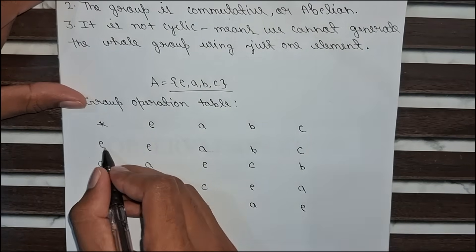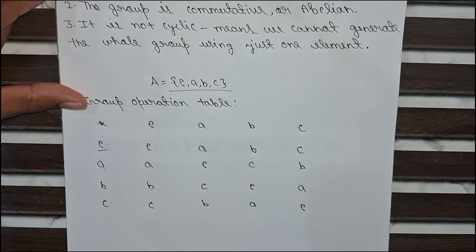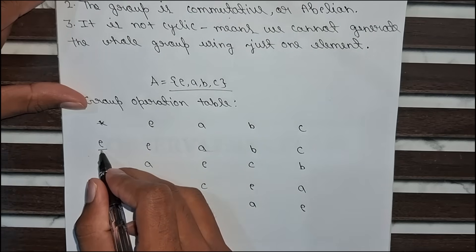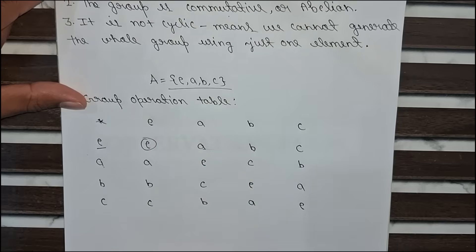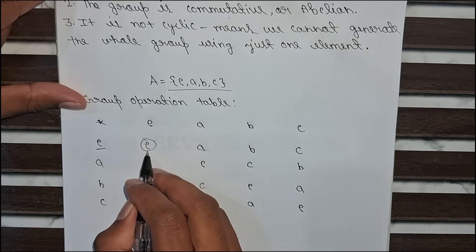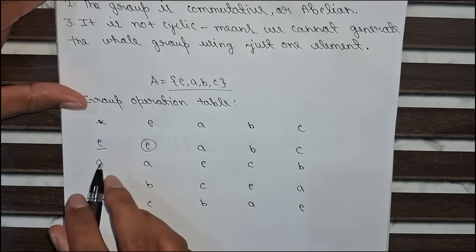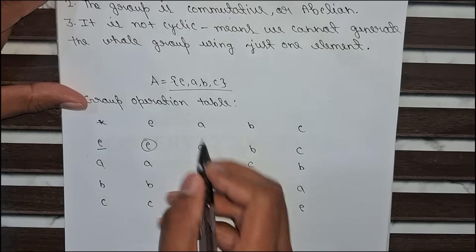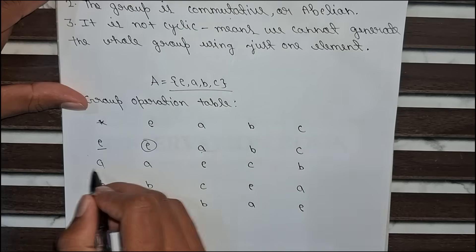Firstly, e × e: here e is behaving like an identity element, so when we multiply identity with identity it gives the identity element itself, so e × e = e. Now e × a: if we multiply the identity element with another element it gives the same value, so e × a = a, e × b = b, e × c = c.